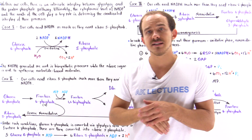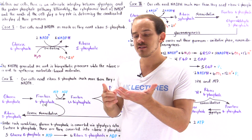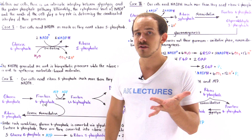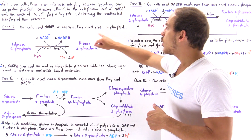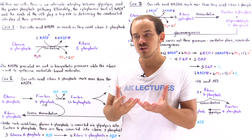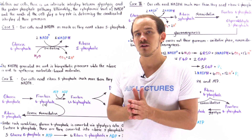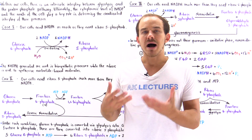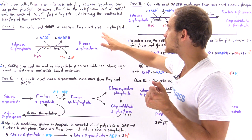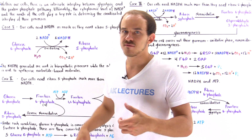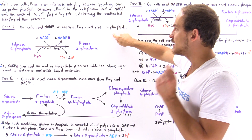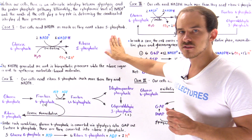For instance, our cells can use NADPH for processes such as fatty acid synthesis, cholesterol synthesis, neurotransmitter synthesis, and nucleotide synthesis. As for ribose-5-phosphate, it is the molecule needed to build nucleotide-based molecules. Molecules such as DNA and RNA depend on the presence of ribose-5-phosphate, so if our cell needs to build DNA molecules, it needs a supply of ribose-5-phosphate.